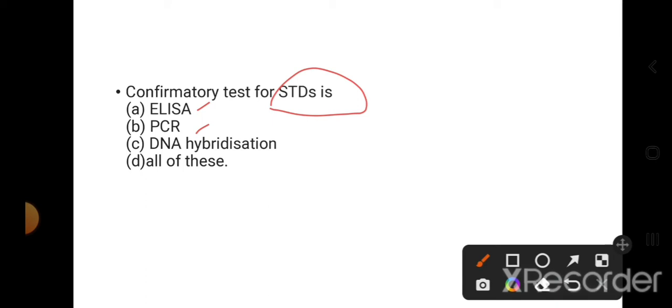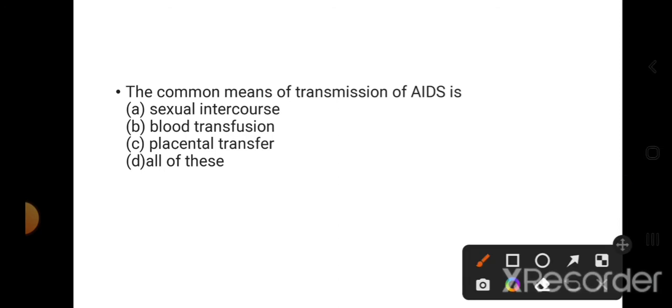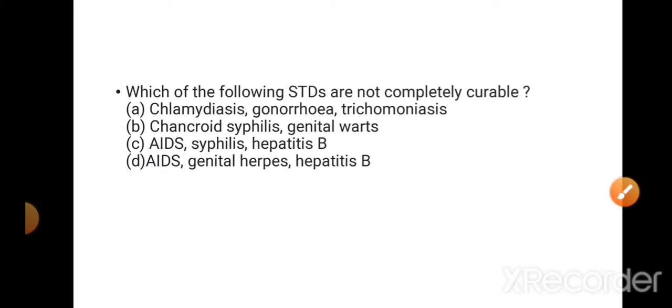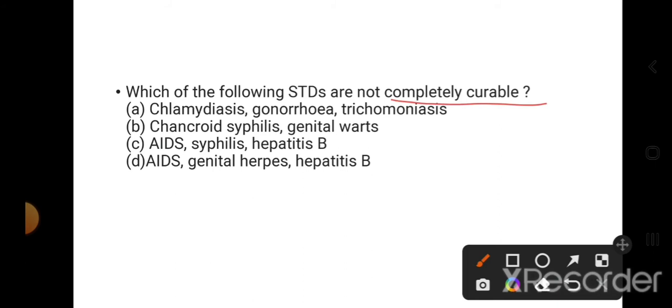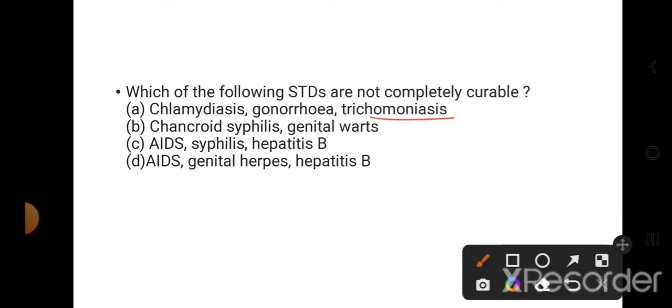PCR - polymerase chain reaction, DNA hybridization. So the best option is all of these. The common means of transmission of AIDS: sexual intercourse, blood transfusion, placental transfer - all of the above. So the right option is all of the above. Which of the following STDs are not completely curable? The diseases that cannot be completely cured are AIDS, genital herpes, and Hepatitis B. Other diseases like trichomoniasis, chancroid, chlamydiasis can be cured.